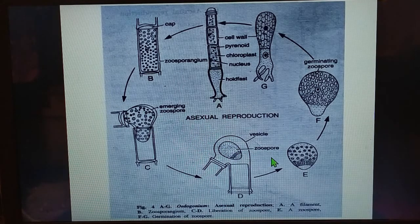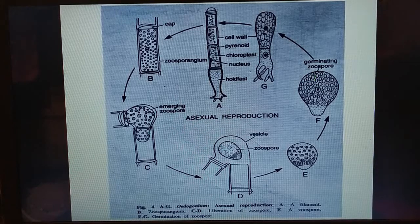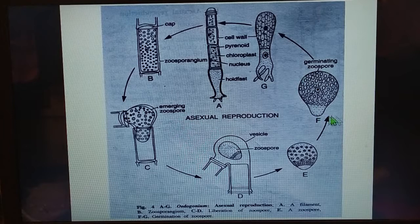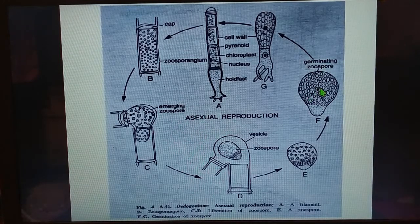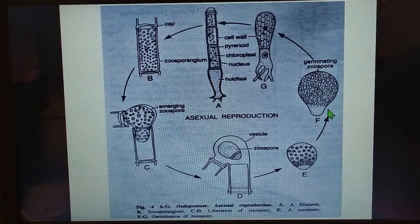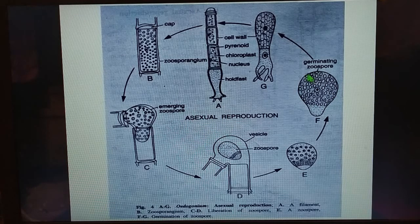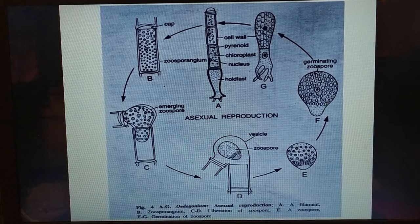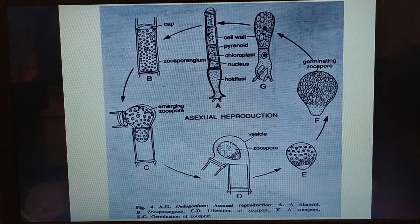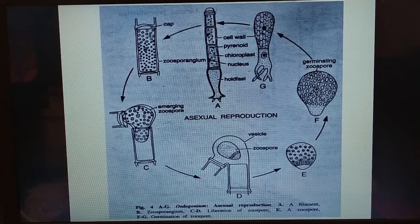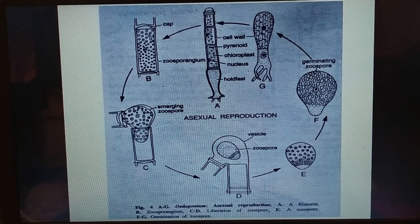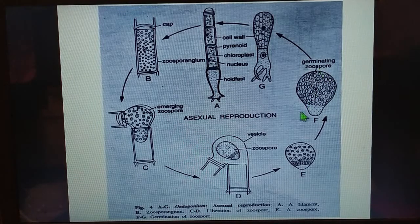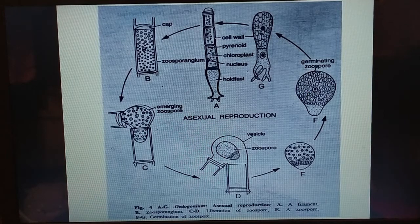The zoospore is ovoid, spherical, or pyriform — that is, pear-shaped. It is uninucleate, with a single nucleus, and contains a chloroplast. Sometimes the zoospore also possesses an eyespot, which is a photoreceptive organelle that helps the cell sense the direction or intensity of light and respond to it.